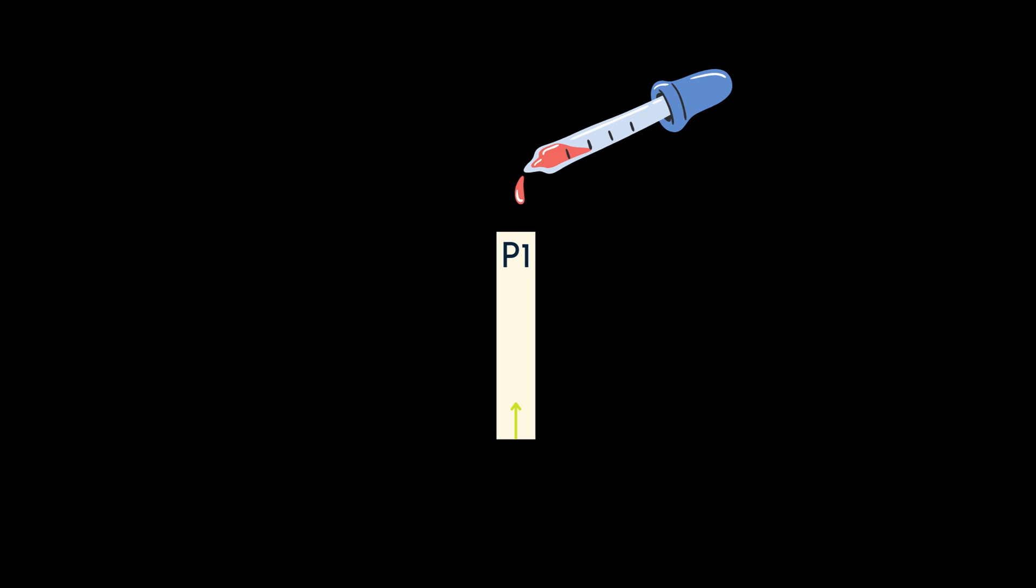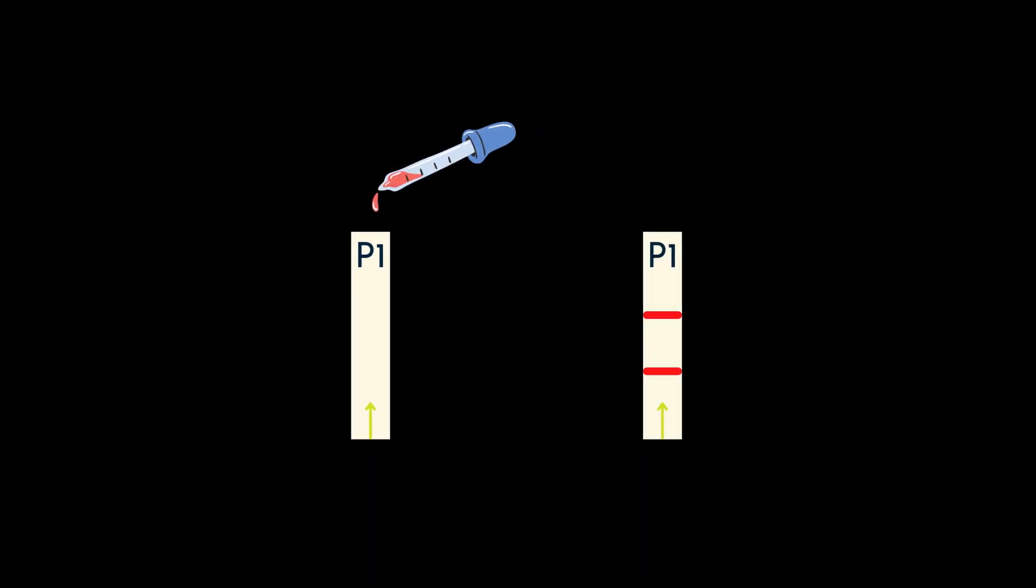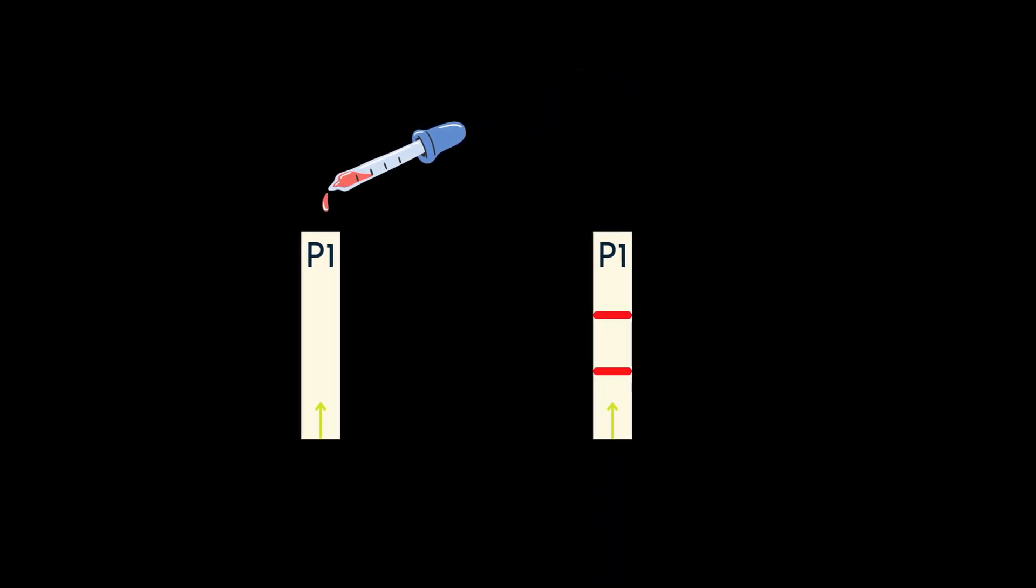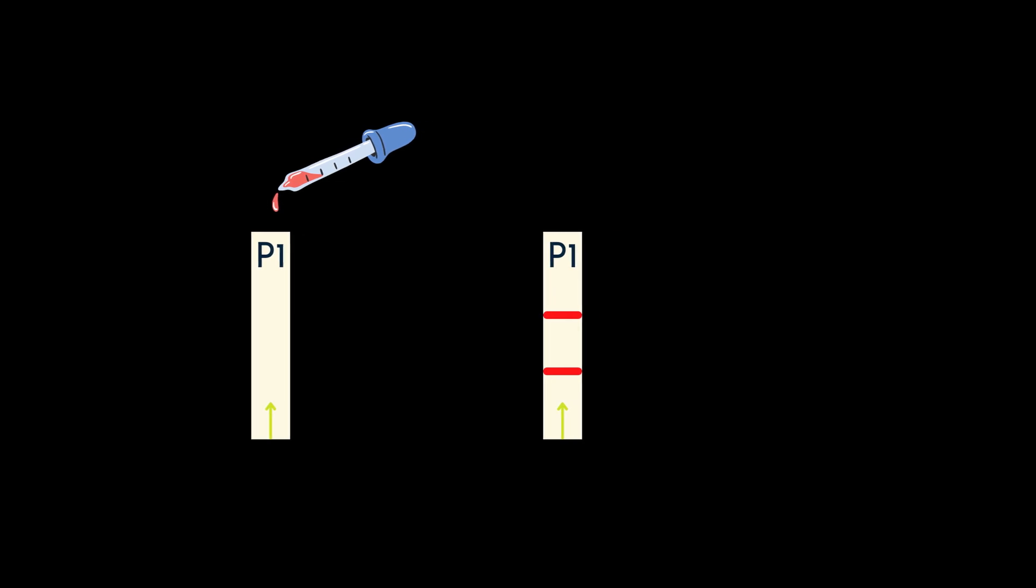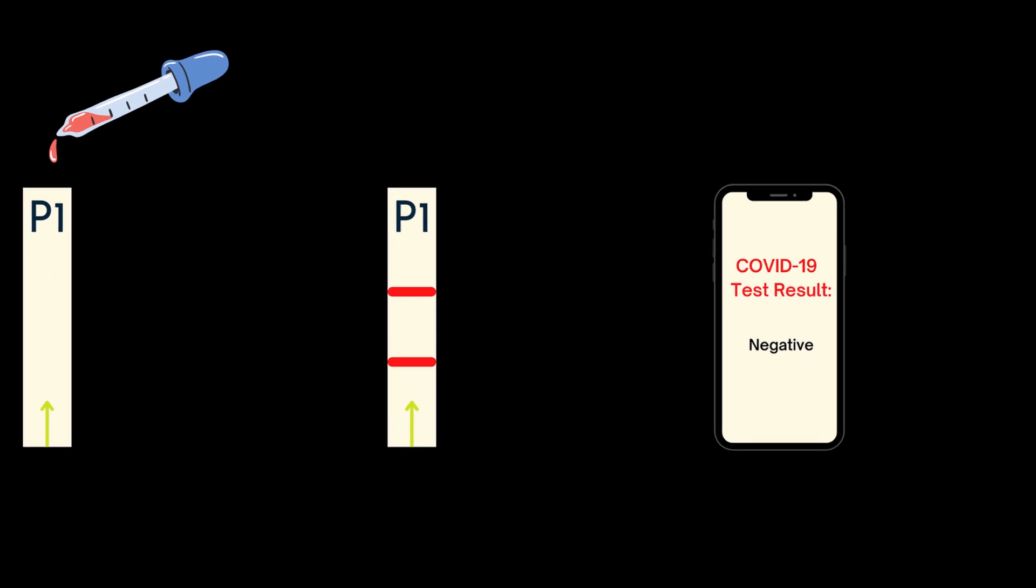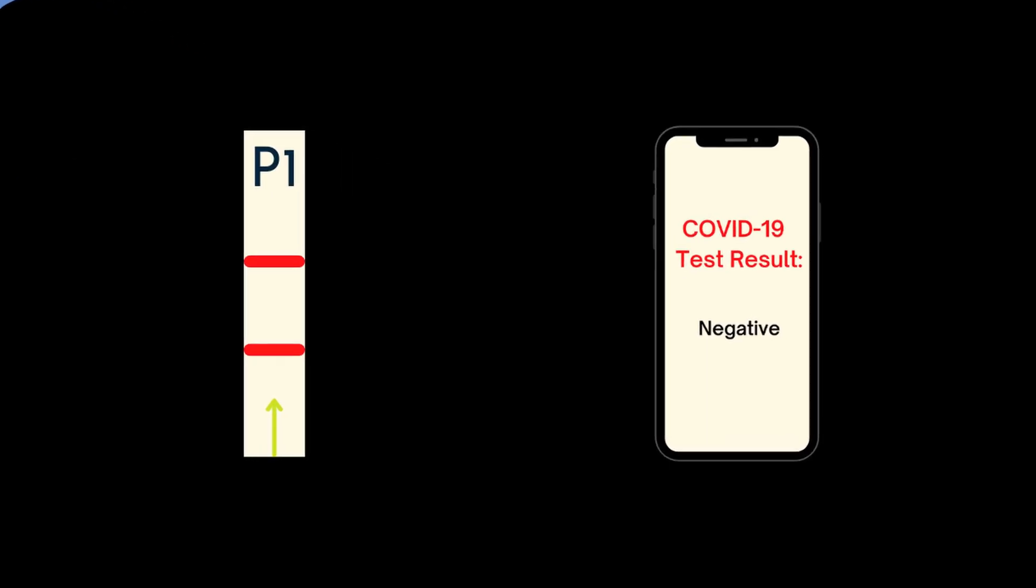When the paper strips are dipped in a reaction product, colored lines appear on the strips. An image of the paper strips on a specialized cartridge is taken by the smartphone application, and the application uses image classification to classify the images as COVID-positive or negative.